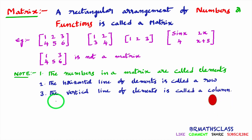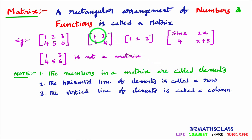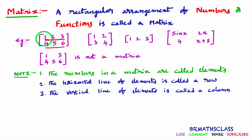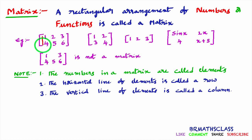Now we will learn what is a row and what is a column in a matrix. The horizontal line of elements is called a row. Observe here — this is one row: 1, 2, 3. This is known as the first row. What is the second row? Second row is 4, 5, 6. The vertical line of elements is called a column. This is one column — in this column, the elements present are 1 and 4. This is the second column and this is the third column. So the vertical line of elements is called a column.